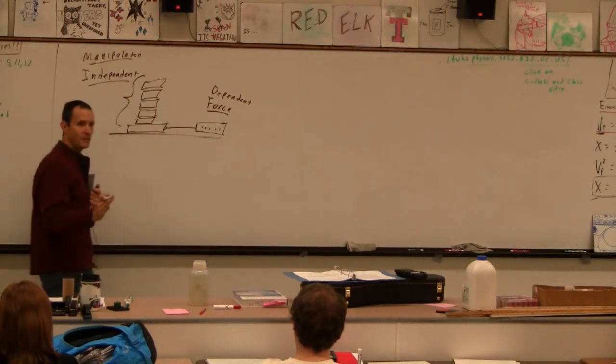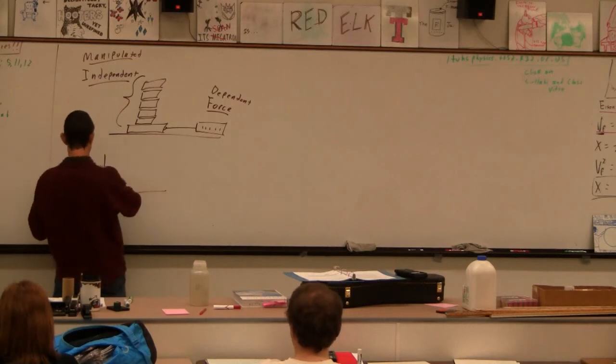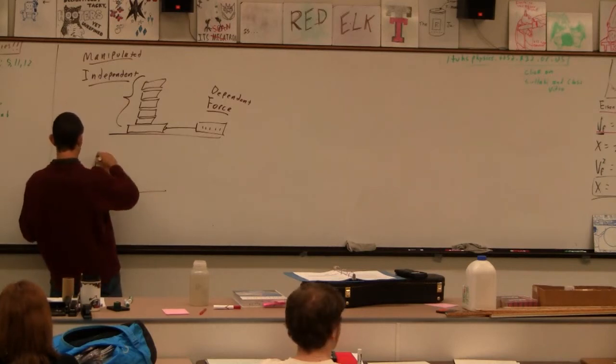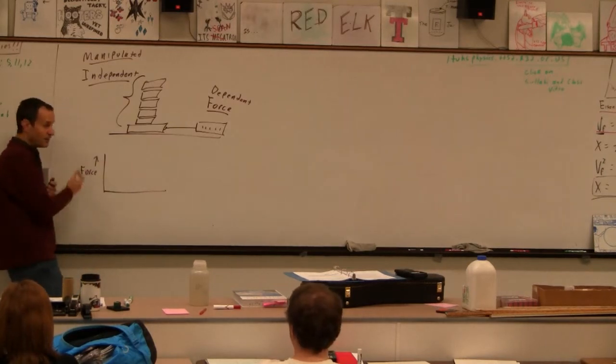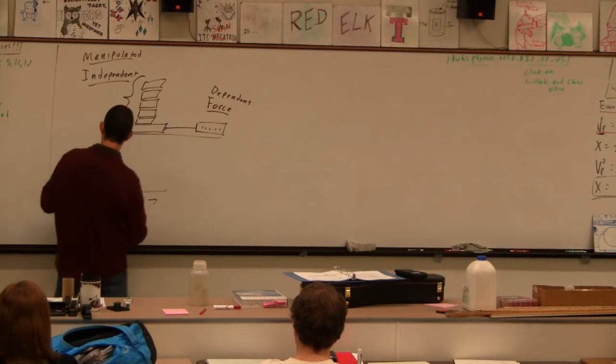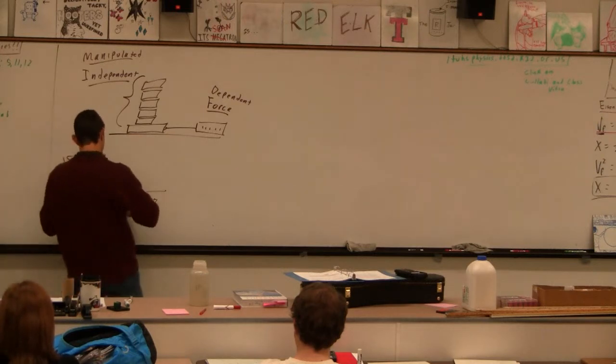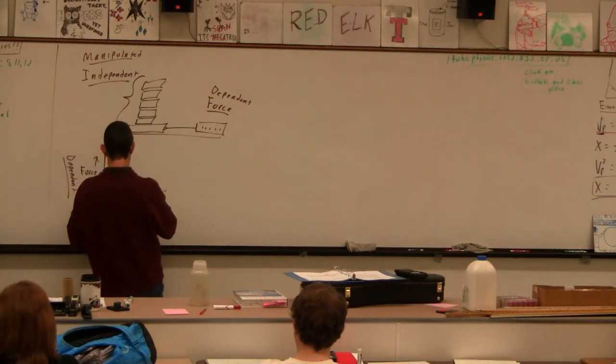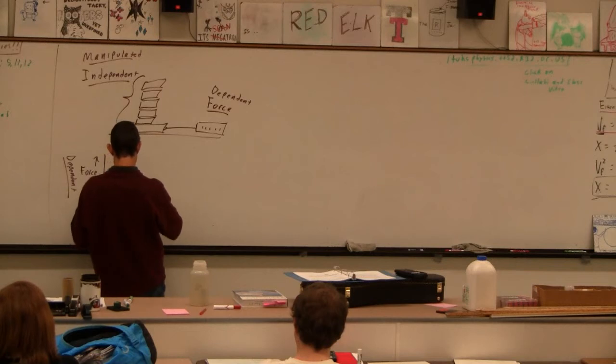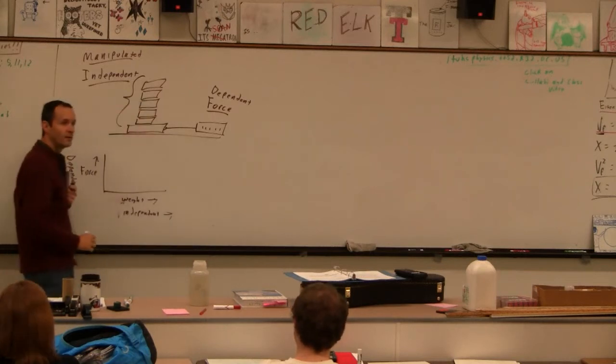Now, you know, standard thing to do, by the way, is to graph them this way. Force this way. So dependent variable up and down, independent variable. So in this case, the weight. So graphs, a standard graph is dependent, there's three E's in dependent. And then independent this way. When you make the graph.